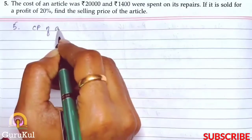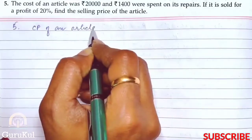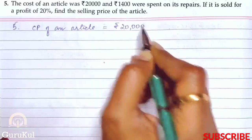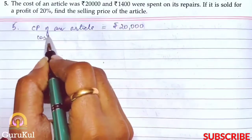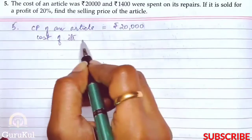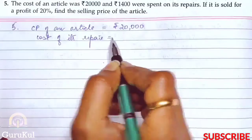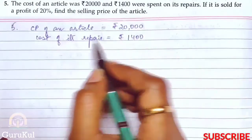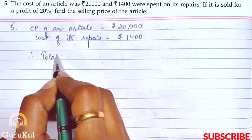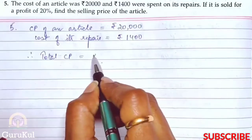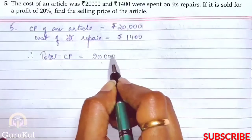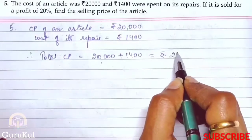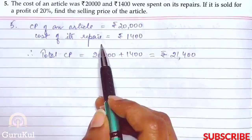CP of the article is equal to rupees 20,000. Cost of its repair is equal to rupees 1,400. Therefore, total cost price is equal to 20,000 plus 1,400, that gives us rupees 21,400.